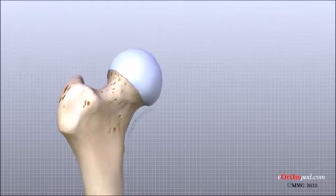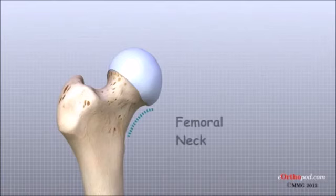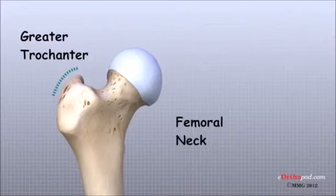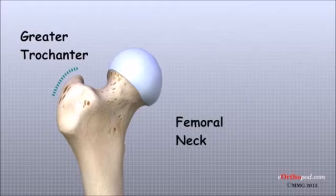The femoral head is attached to the rest of the femur by a short section of bone called the femoral neck. A large bump juts outward from the top of the femur next to the femoral neck. This bump, called the greater trochanter, can be felt along the side of your hip. Large and important muscles connect to the greater trochanter.